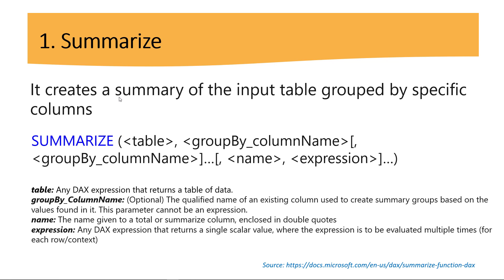This function creates a summary of the input table grouped by specific columns. It has four different parts, one of which is optional. The table can be a table in your model or any DAX expression that returns a table of data. The second part is the group by column name, which is optional. The name is the name given to a total or SUMMARIZE column, enclosed in double quotes because it's text. And finally, the expression — it can be any DAX expression that returns a single scalar value, evaluated multiple times. For the expression, it's usually an aggregation function.